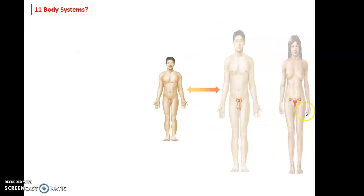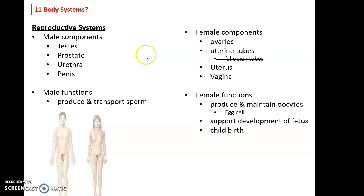And then we have this body system, which is very different between males and females: the reproductive system. So in males, we have the testes, the prostate, the urethra, and the penis. And the main functions of the male reproductive system is to produce and transport sperm. That's it.